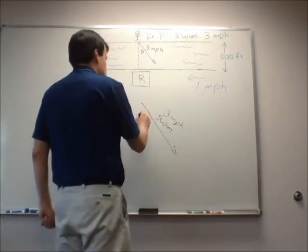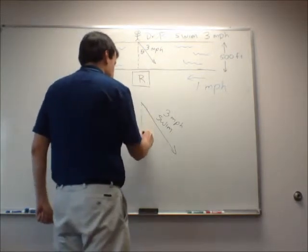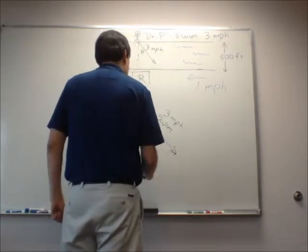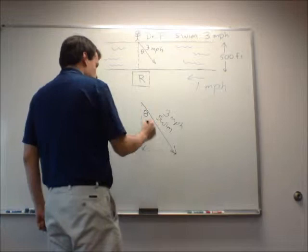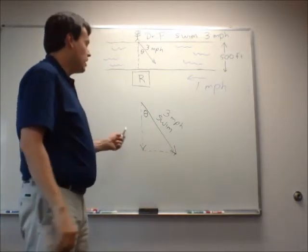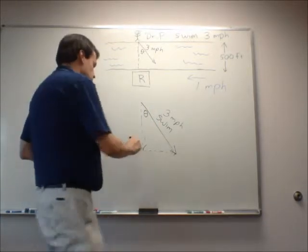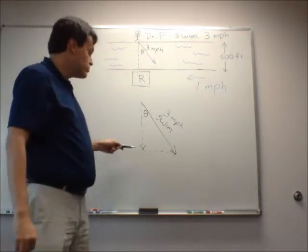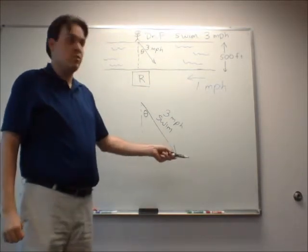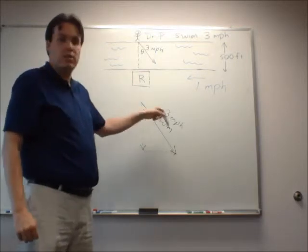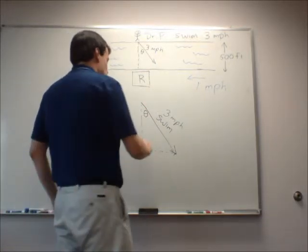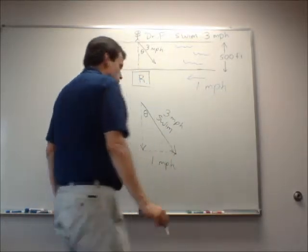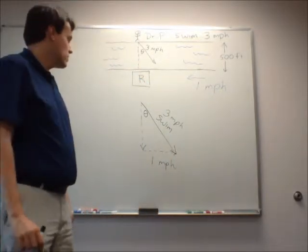Alright. Now, that vector is going to have two components. There's an angle here. And the one thing that I know is that because my current is pushing me back at 1 mile per hour, I need to push myself to the right at 1 mile per hour. And that has to come from my 3 miles per hour of swimming velocity. So I'm going to need this to be 1 mile per hour, no matter what.